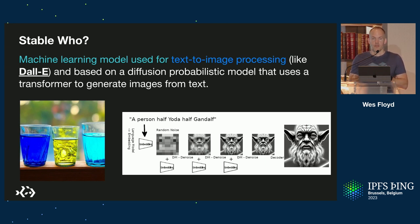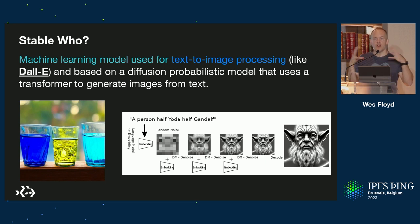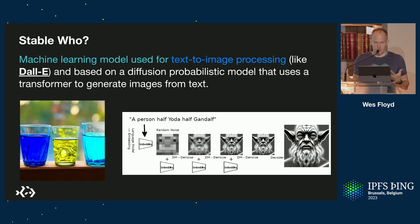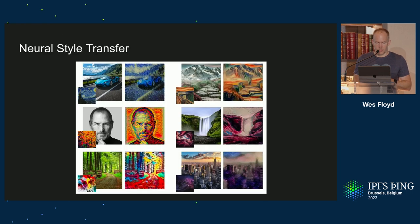That computation is important because it's an example of a computation that's way too large to happen on a smart contract. FVM smart contracts are very powerful because they're trustless and verifiable, but they're not as open-ended — you can't do arbitrary compute like this. So this is a good example of what you want to offload.